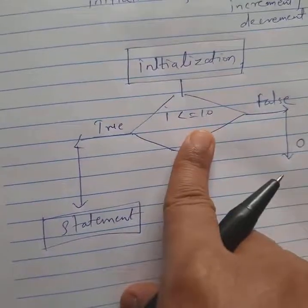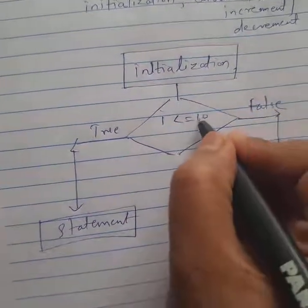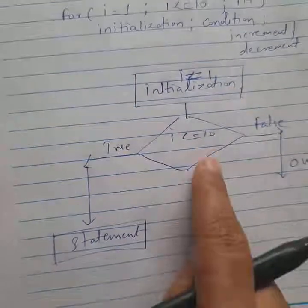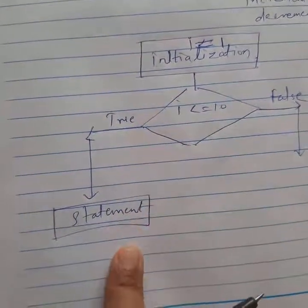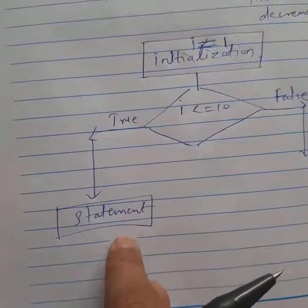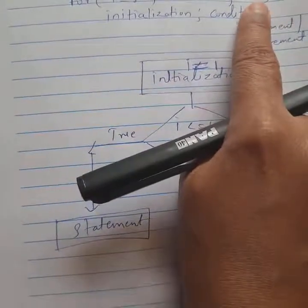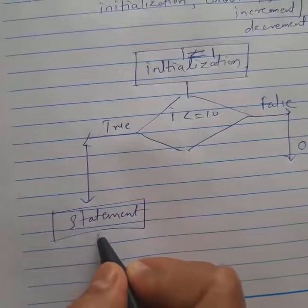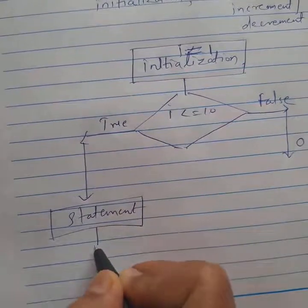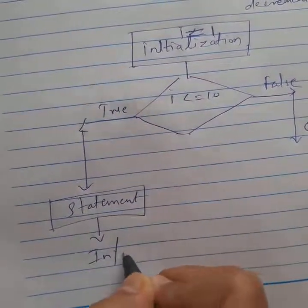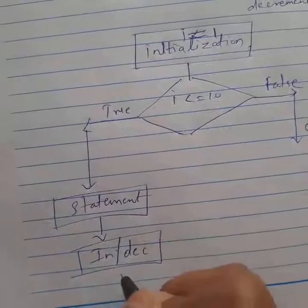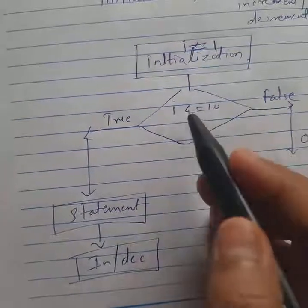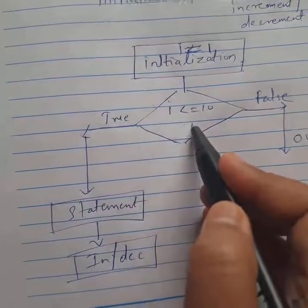Starting with initialization 'i = 1', if the condition is true, the controller will go to the statement. After the statement executes, the third part — increment — runs. The loop iterates until the condition becomes false.